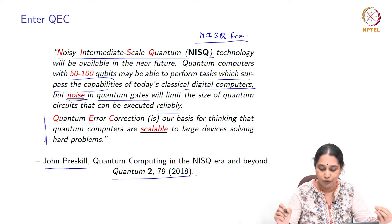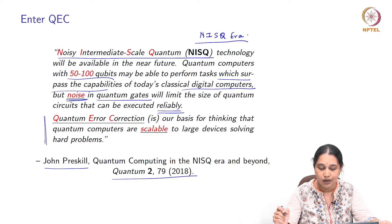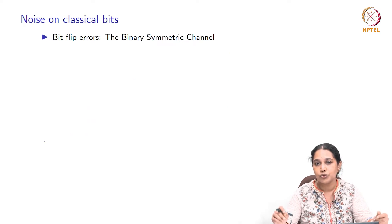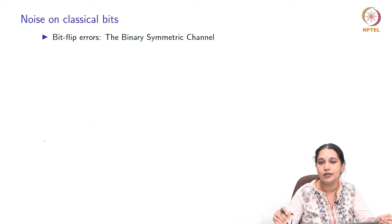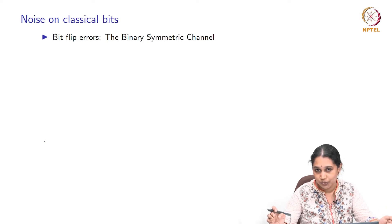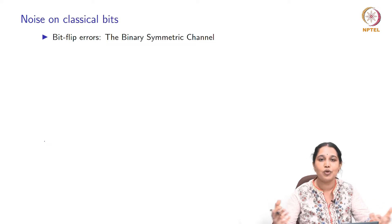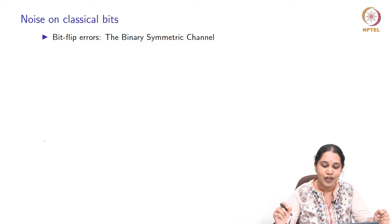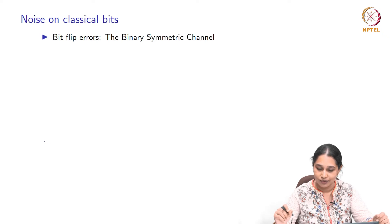Before we step into understanding quantum noise, it is useful to think a little bit about classical processors and the noise that affects classical computers. Classical bits are also prone to noise of course, but we do not discuss this issue with such vehemence when we talk about classical processors, and that is for the following reason. What is the kind of noise that can affect classical bits?